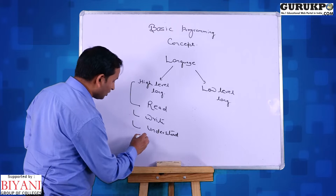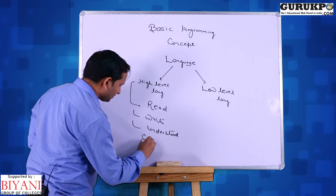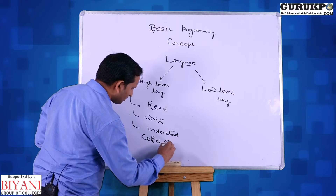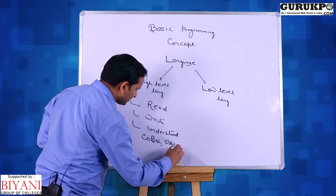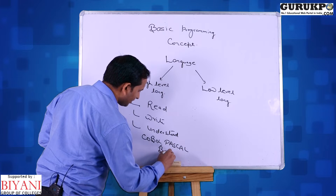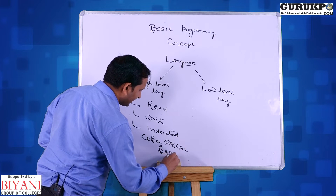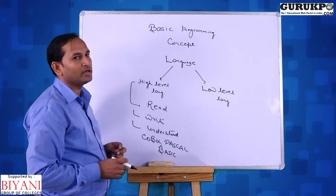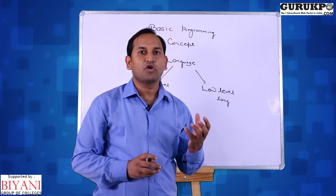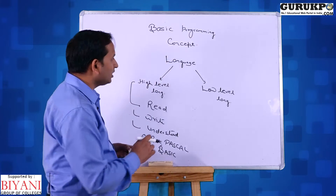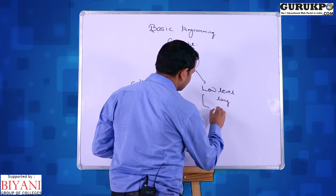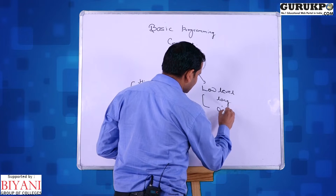For example, COBOL, Pascal, and BASIC are high level languages. The second type is low level language — language which is in the form of zeros and ones is called low level language.